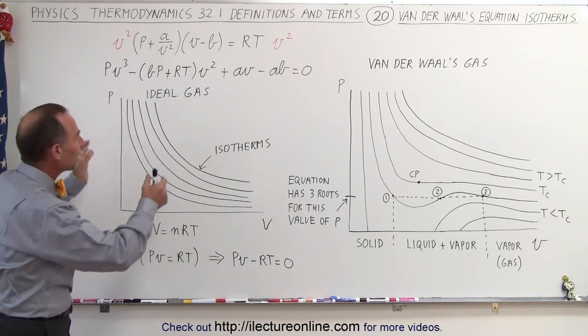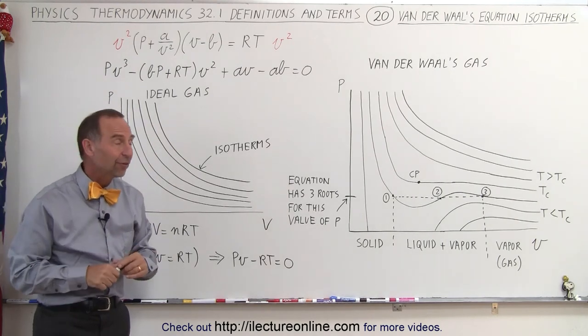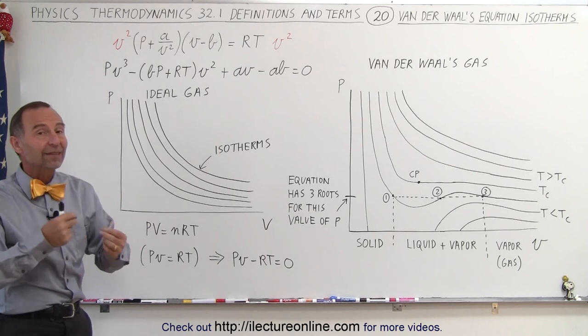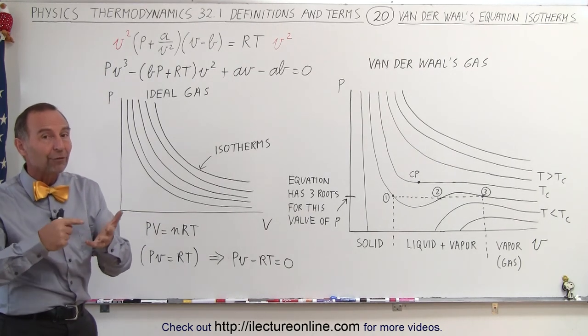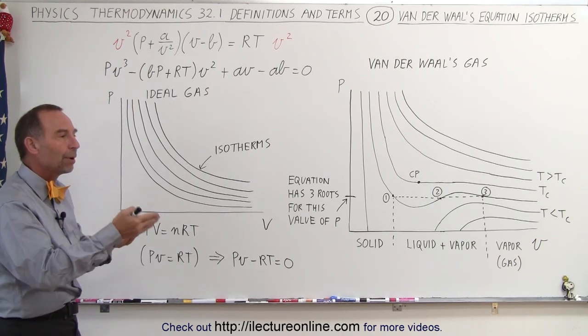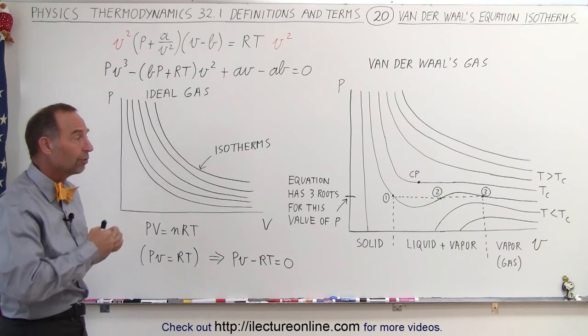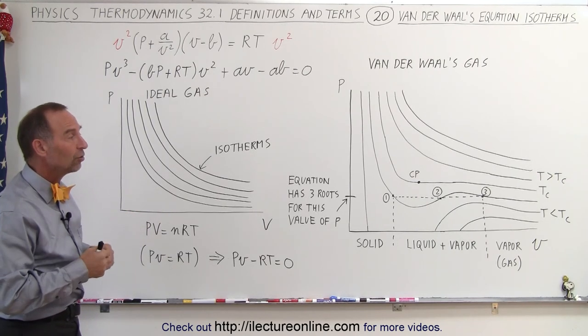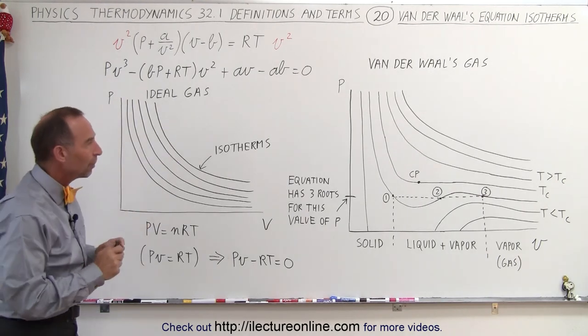But what does it look like when we instead have the Van der Waals equation? And as we saw in the previous video, there are so many different things that constantly vary: the pressure, the volume, the temperature, a over v squared varies, and then b has a different proportionality compared to the volume. In other words, the value of b changes relative to the volume. As the volume changes, it's very difficult to get a feel of what this equation really represents.